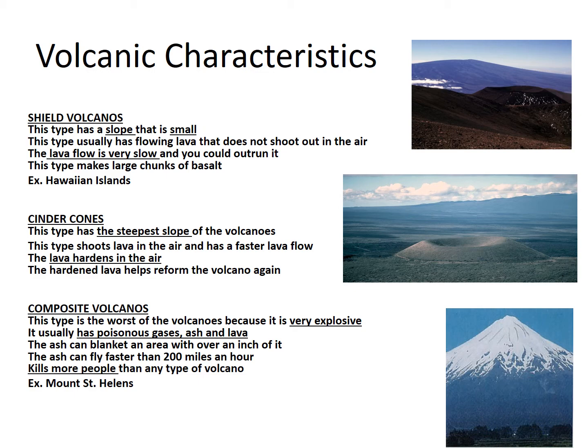Composite volcanoes are the worst type — they're very explosive. They give off poisonous gases, ash, and lava. Ash can blanket an area with over an inch of ash and can fly faster than 200 miles an hour. This type kills more people than any other type of volcano. An example would be Mount St. Helens in Washington.